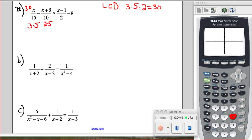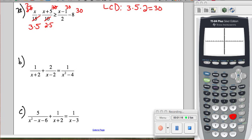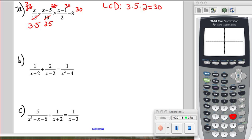So if we multiply both sides by 30, that means we multiply every term by 30. That will get rid of all of the denominators. So this reduces into 2, this reduces into 3, and this reduces into 15.